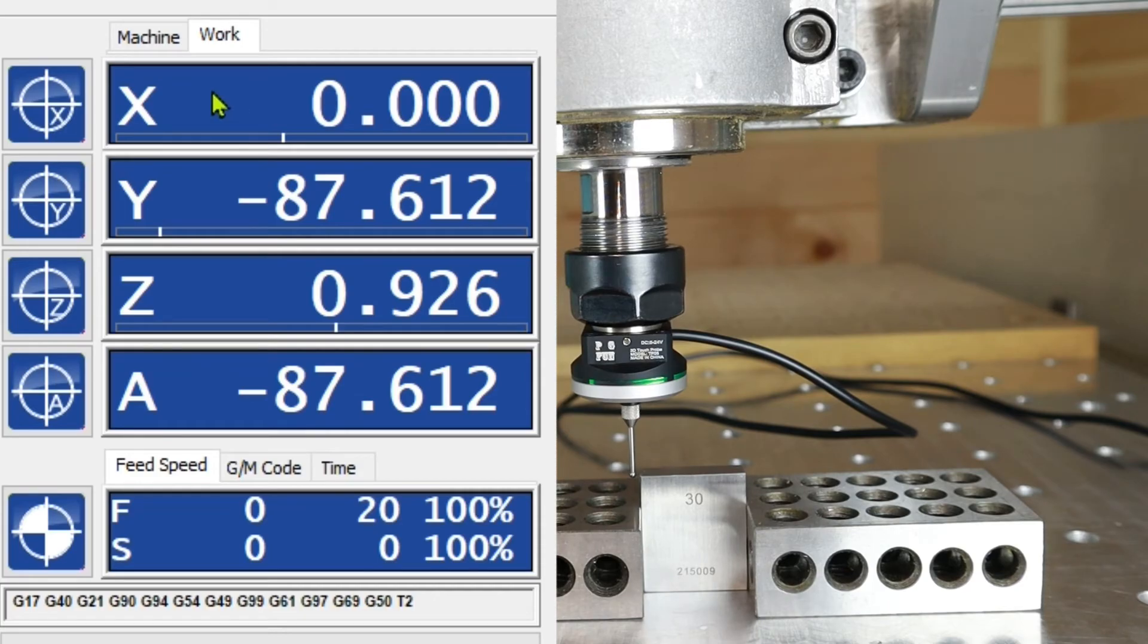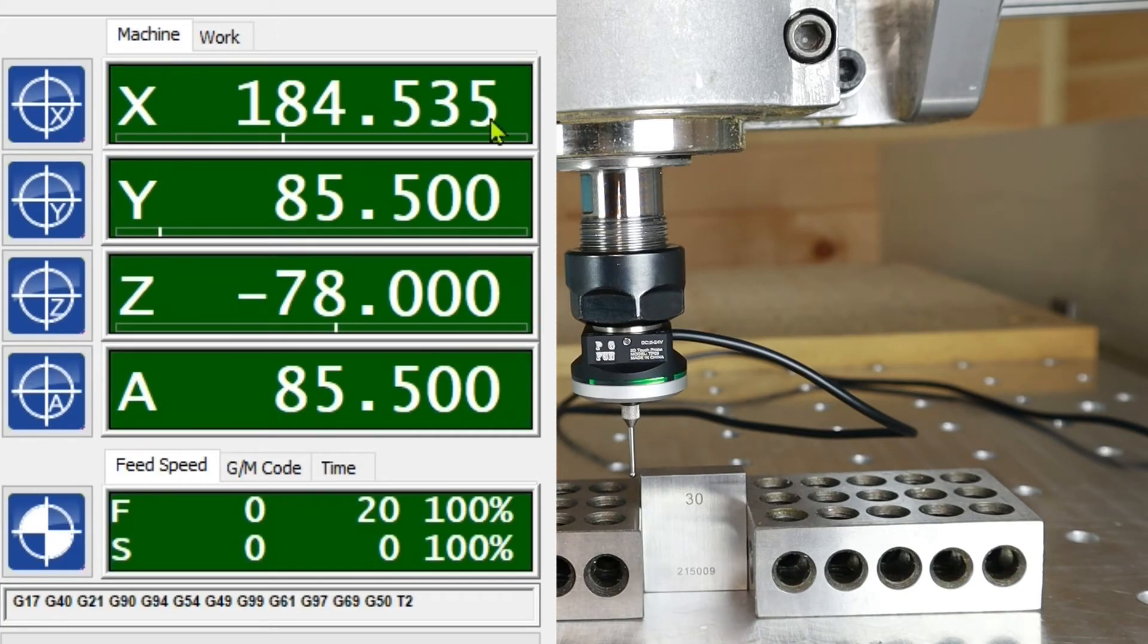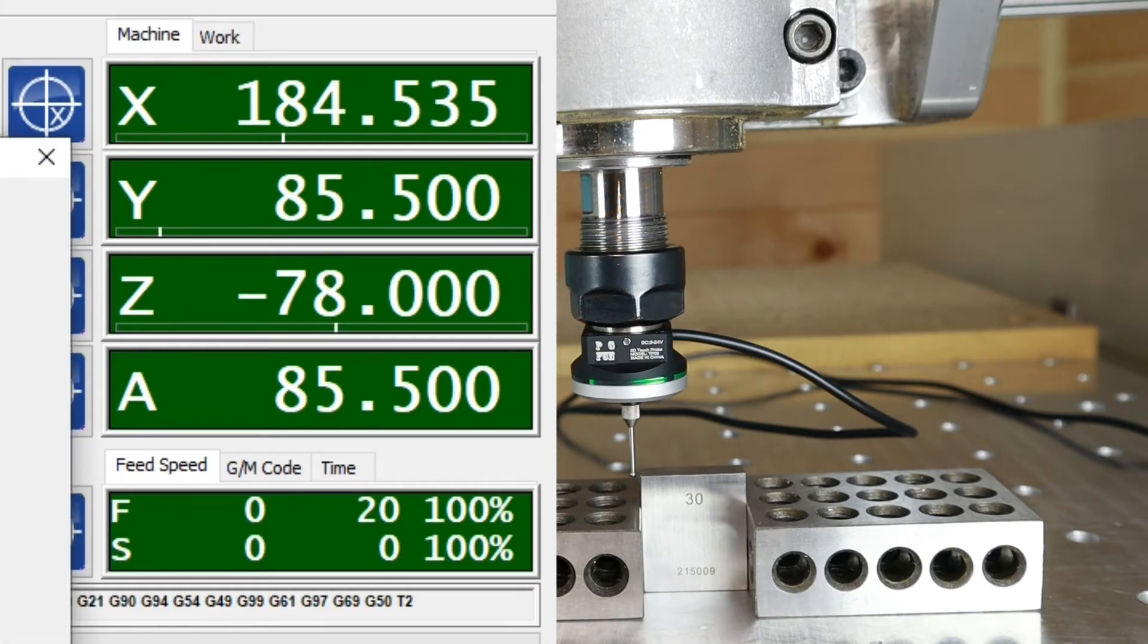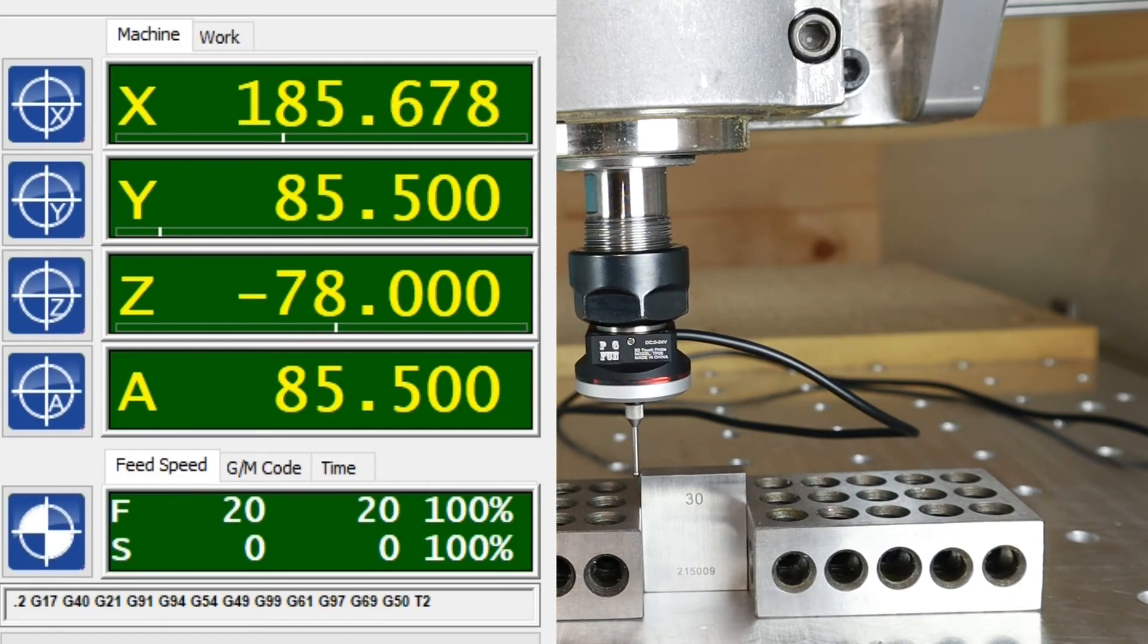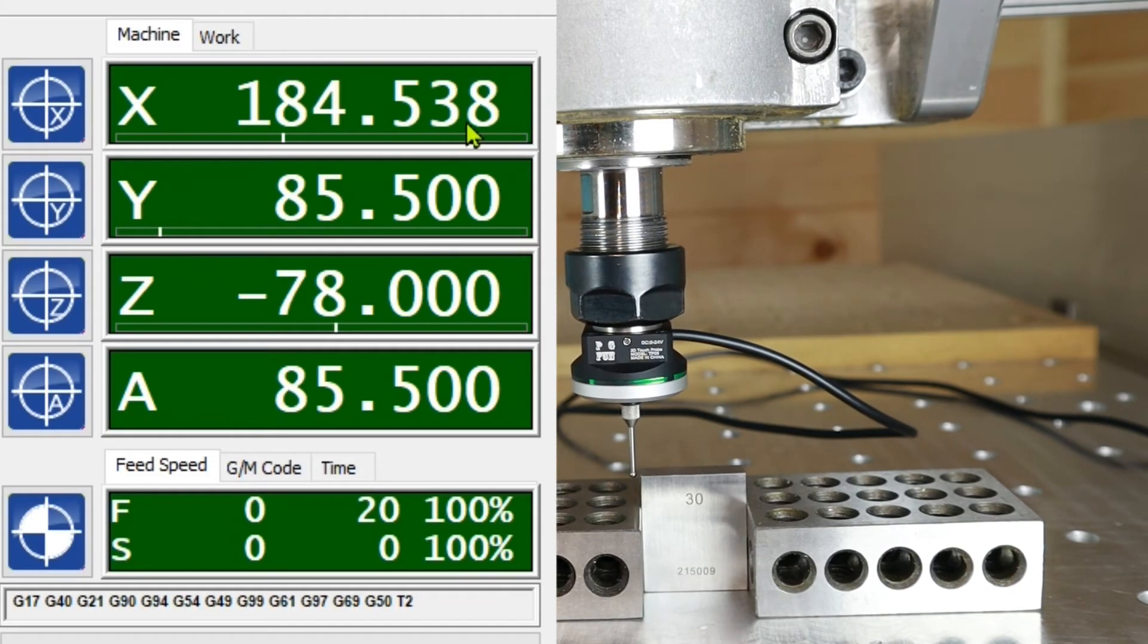The problem is that it will zero out every single time to X zero and write basically that dimension zero it out. But what it will not do and cannot do is go and change the machine work coordinate systems. That's what we see right here. So it's 184.535. Let's remember that number and let's do another touch off. 538. 535, 538. That's three thousandths. Three microns. Well that would be good.